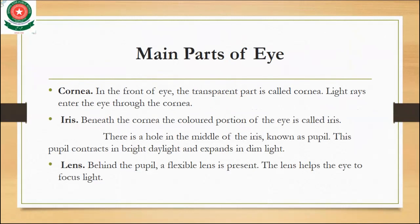First is the cornea. In the front of the eye, the transparent part is called the cornea. The light rays enter the eye through the cornea.